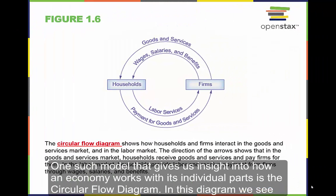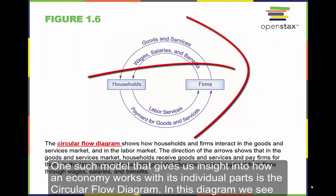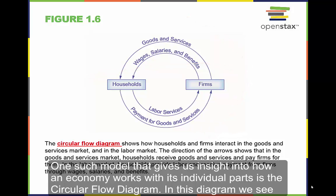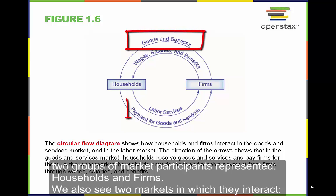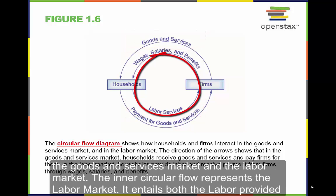One such model that gives us insight into how an economy works with its individual parts is the circular flow diagram. In this diagram we see two groups of market participants represented: households and firms. We also see two markets in which they interact: the goods and services market and the labor market.